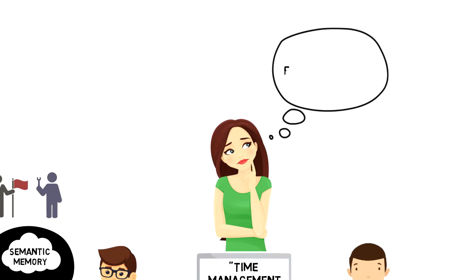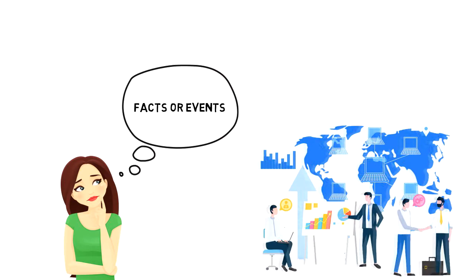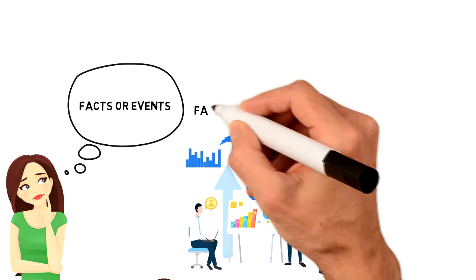Semantic memory is one of two types of explicit memory, our memory of facts or events that are explicitly stored. Semantic memory refers to general world knowledge that we have accumulated throughout our lives.